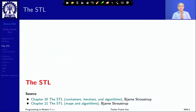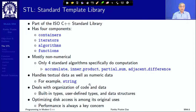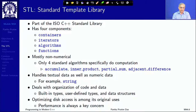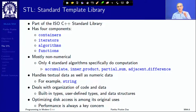Let me formally introduce STL, the standard template library. STL is a part of the ISO C++ standard library. STL has four components: containers, iterators, algorithms, and functions which are basically function objects. These are the primary components of STL, and we will see the use of these components in almost every other component of the C++ standard library.